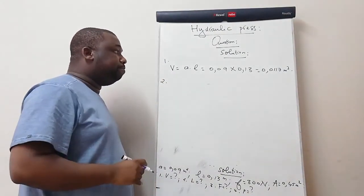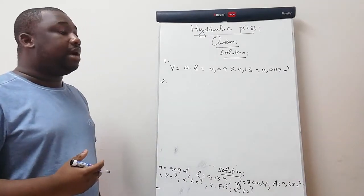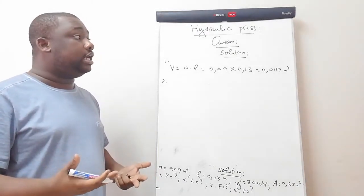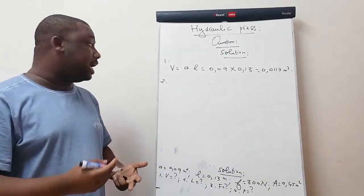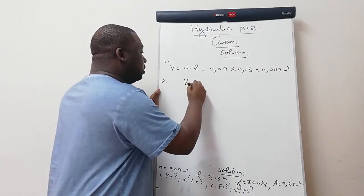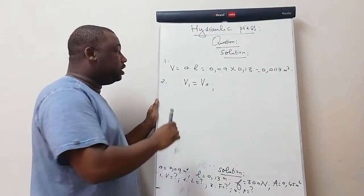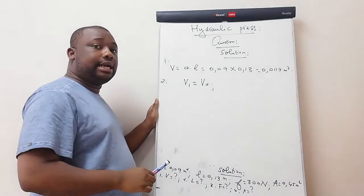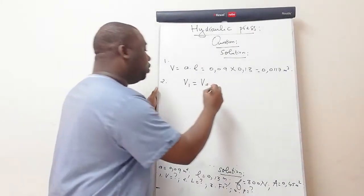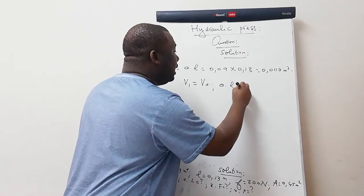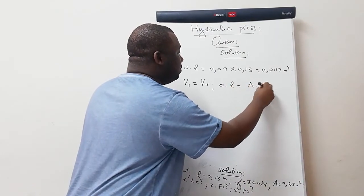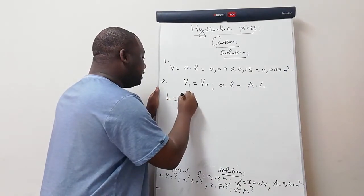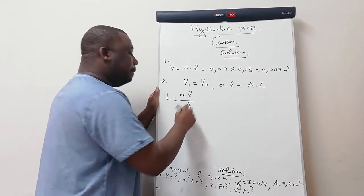Question two: find the distance moved by the ram after one pumping stroke, i.e., the stroke length of the ram (big L). Using V1 = V2: small a × small l = big A × big L. Making big L the subject: big L = (small a × small l) / big A.